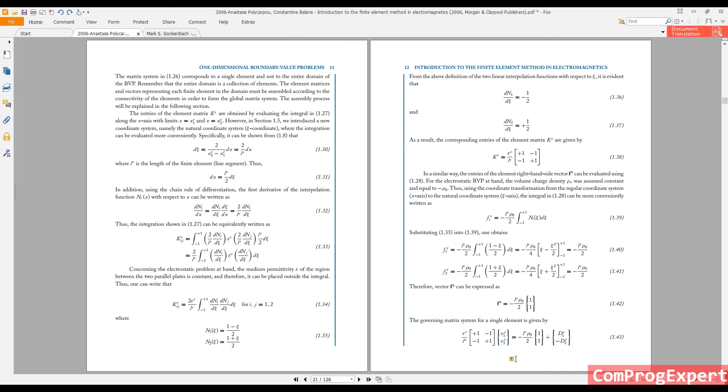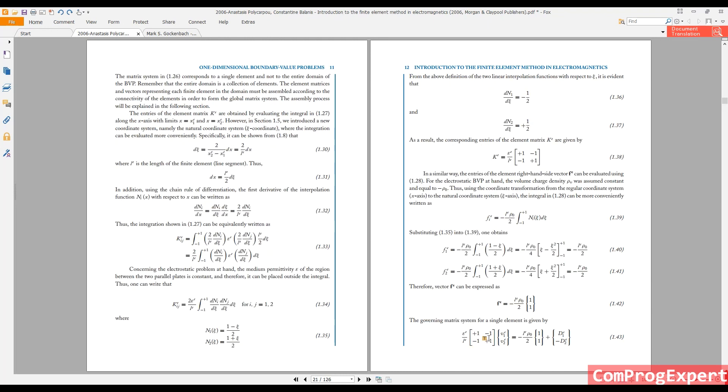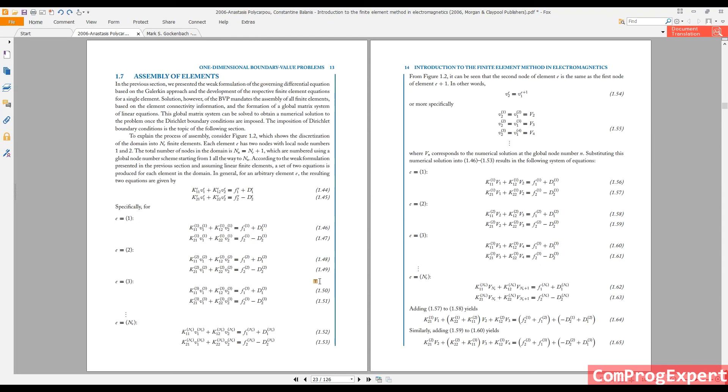So we have this equation for one element. What are unknowns? V1 and V2, right? We know other parameters in this equation. So this is the matrix equation for one mesh element. And the next step is calculation of the same equations for other mesh elements. As you can see here, for each mesh element, we can do the same procedure and derive corresponding equations. So the next step is assembly of elements.